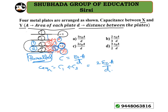Now we are left with one more capacitor — the third capacitor between X and Z. Because of the voltage difference, this must be connected in series. Therefore, C_eq = (C1 × C2) / (C1 + C2).